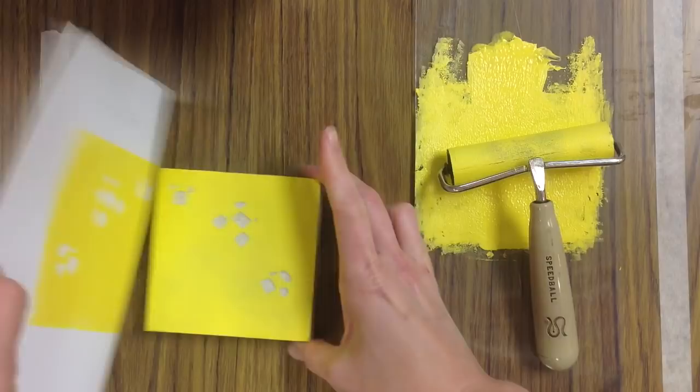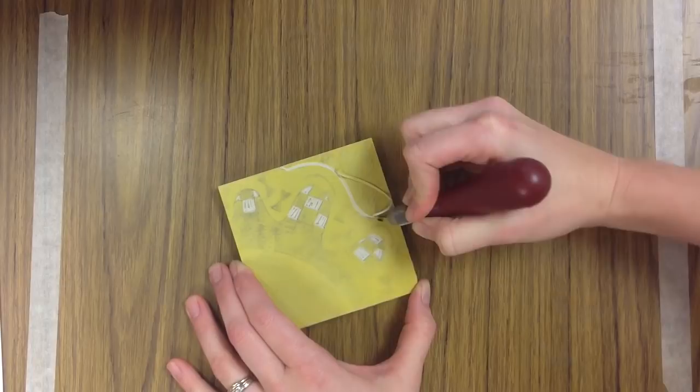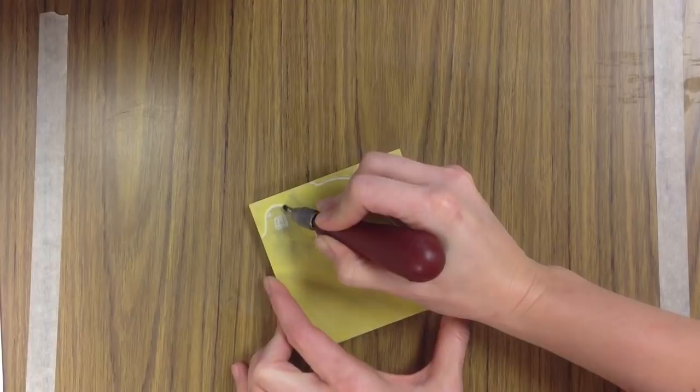So you need to do this four times, then you're going to wash up your block, dry up your block, and then you go back in and you carve away those areas that you want to be yellow. Remember that when you're carving away these spaces, that means the red ink when we put it on the block will not go on these spaces, so those are going to stay yellow on all of your prints.